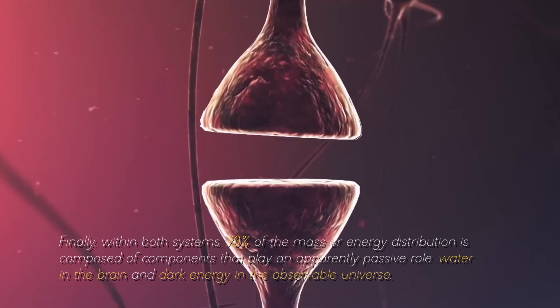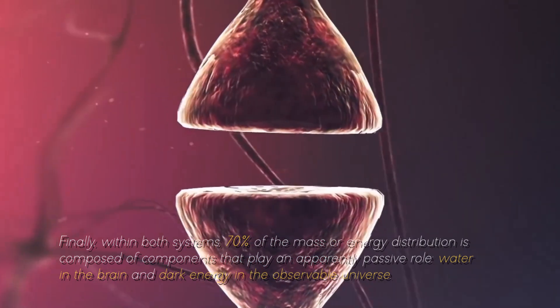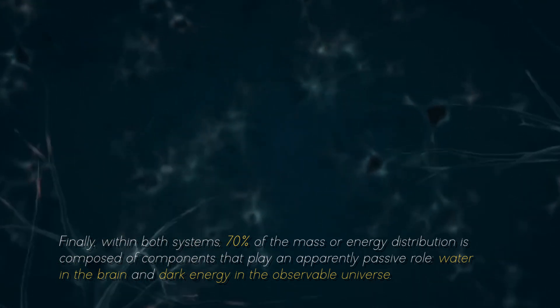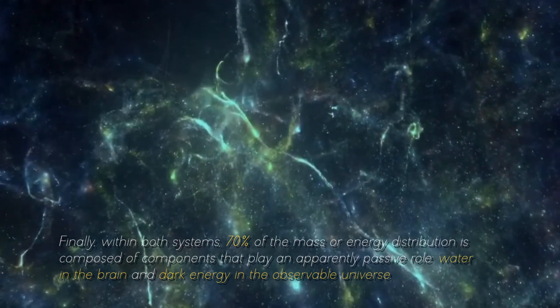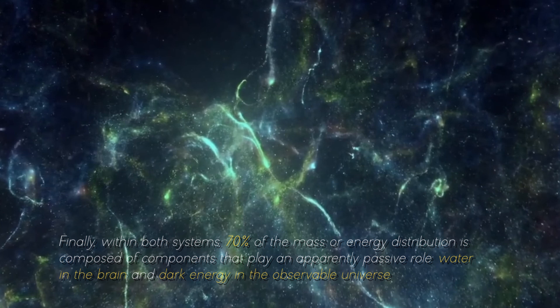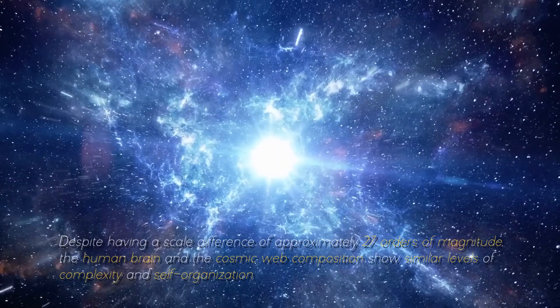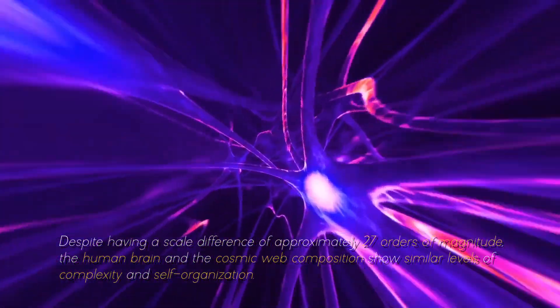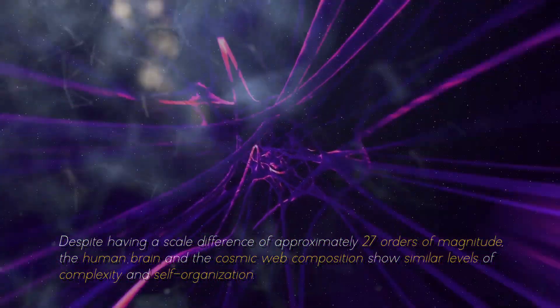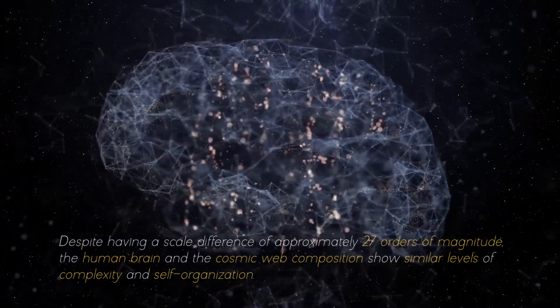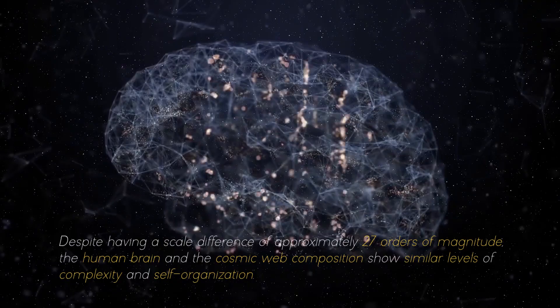Finally, within both systems, 70% of the mass or energy distribution is composed of components that play an apparently passive role, water in the brain and dark energy in the observable universe. Despite having a scale difference of approximately 7 orders of magnitude, the brain and the cosmic web composition show similar levels of complexity and self-organization.